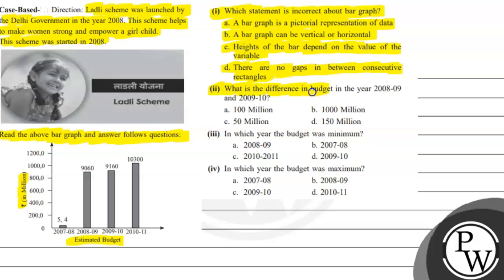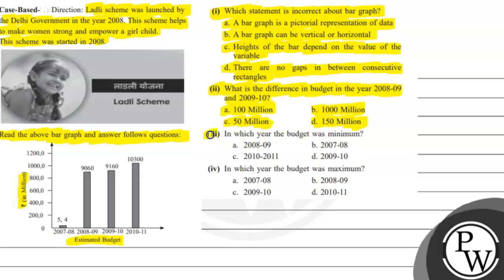Second question: what is the difference in the budget in the year 2008–09 and 2009–10? Option A: 100 million. Option B: 1000 million. Option C: 50 million. Option D: 150 million.